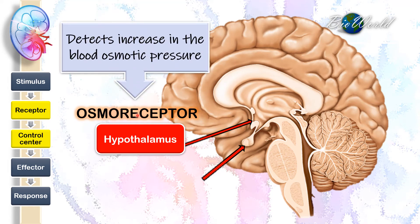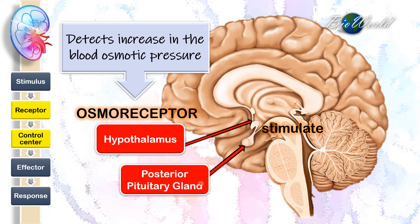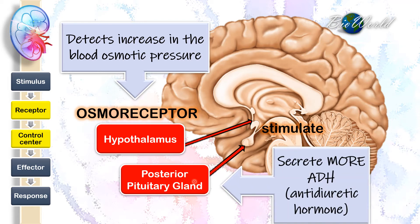When the osmoreceptor detects an increase in blood osmotic pressure, it will stimulate the posterior pituitary gland. The posterior pituitary gland then secretes more ADH — that is, anti-diuretic hormone.